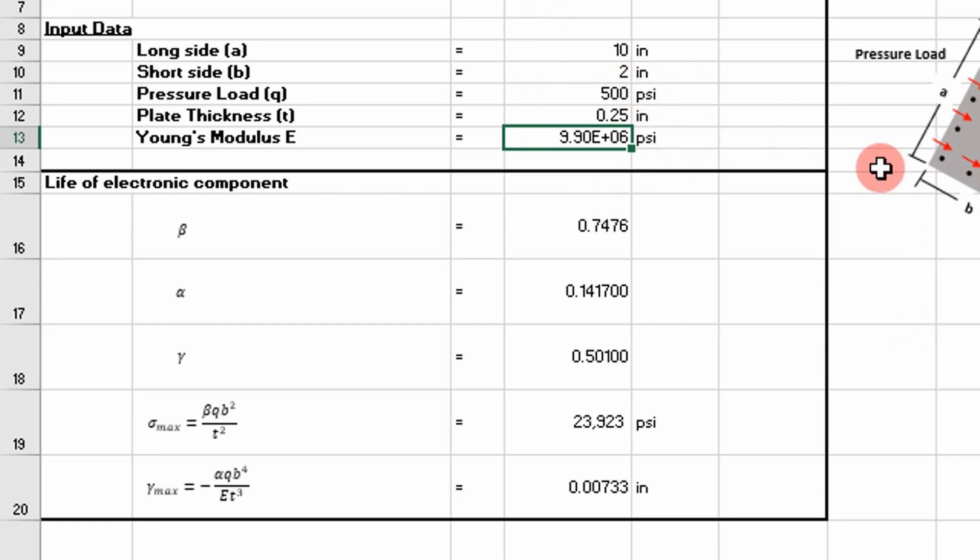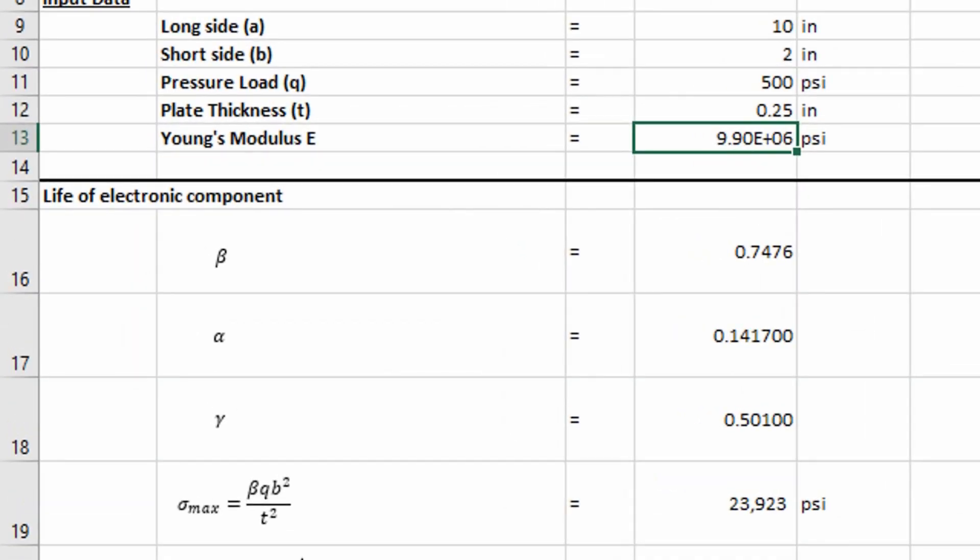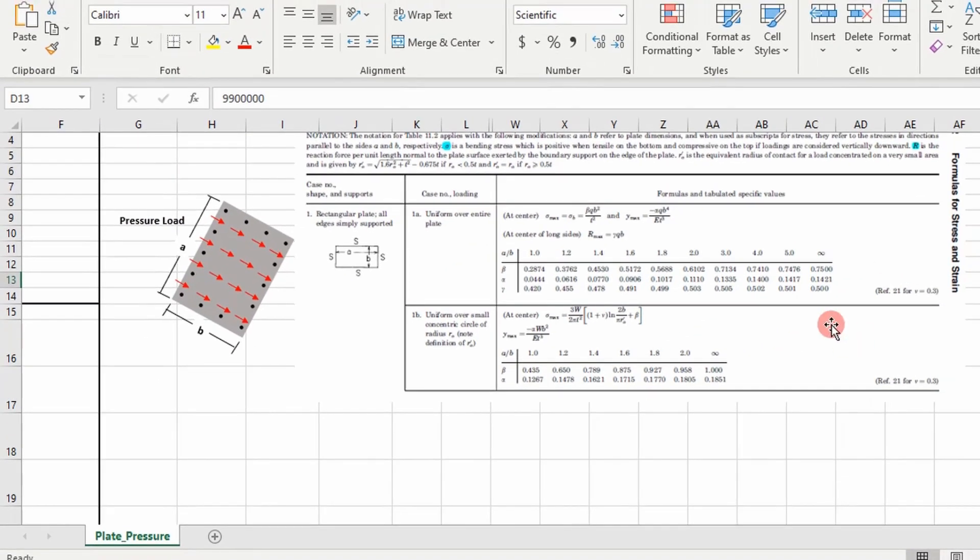So now that you've seen how the tool works, we're going to go ahead and step into the code and figure out how to write this to return our beta, alpha, and gamma.